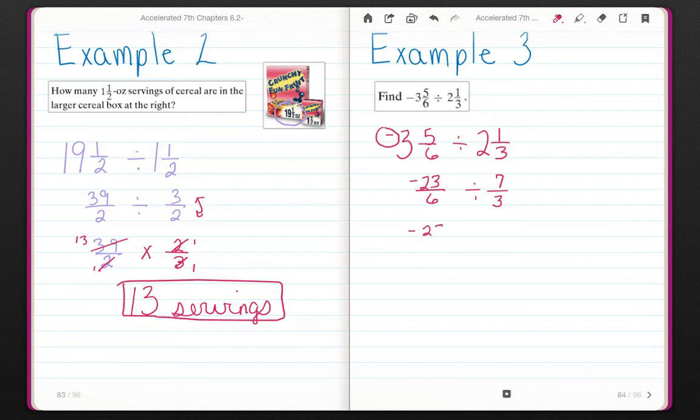Negative 23 sixths will actually be multiplied times the reciprocal, times 3 sevenths. 23 and 7 have no common factors, but 6 and 3 do. Divide both of those by 3. We come up with negative 23 times 1, which is negative 23 over 2 times 7, which is 14.